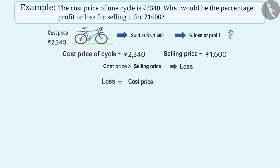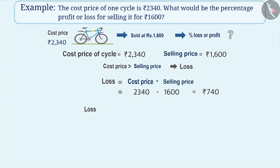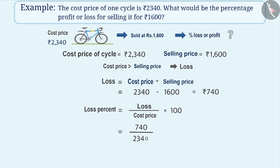Loss is equal to cost price minus selling price, which is equal to 2,340 minus 1,600, which is equal to 740 rupees. Loss percentage is equal to (loss / cost price) × 100, which is equal to (740 / 2,340) × 100, which is equal to 31.62%.